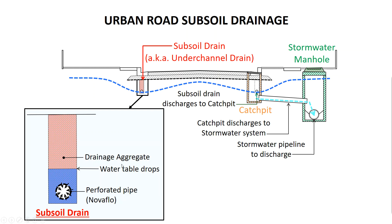This is the same detail that we had for a rural subsurface drain — they are the same thing. Looking at the top diagram, we can see that disposal of the subsurface water usually flows into the catch pits, where it combines with the surface water before flowing to the stormwater system for disposal.